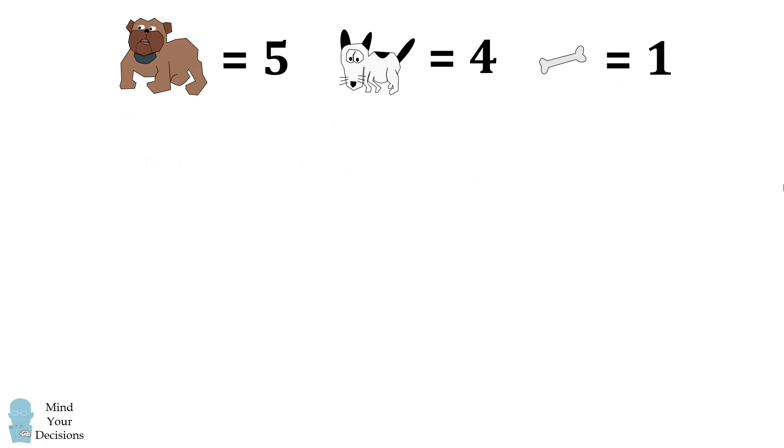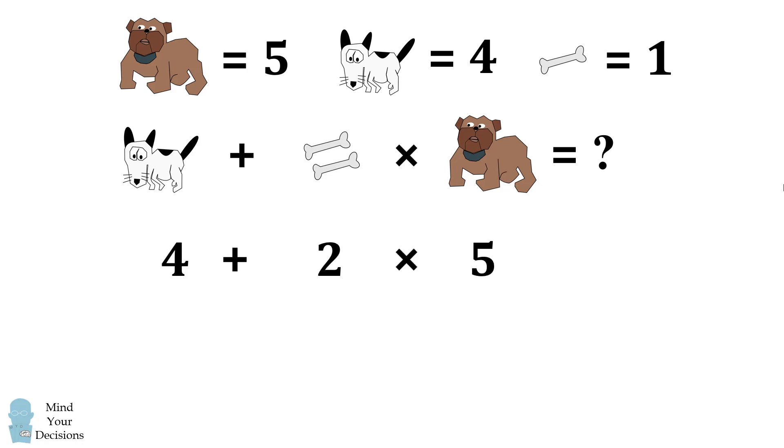We can now use the values of each of these variables to get the correct answer. We have the black and white dog plus two dog bones multiplied by the value of the bulldog. This will be four plus two multiplied by five. What does that equal?